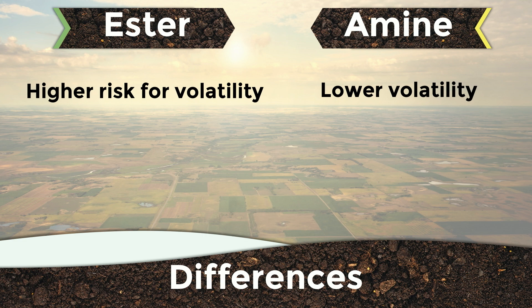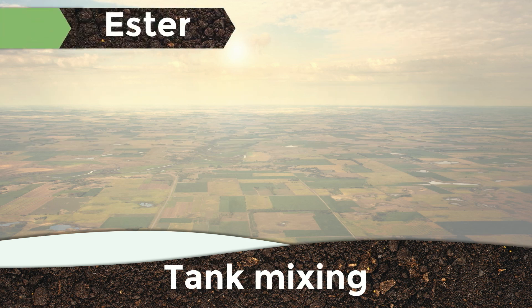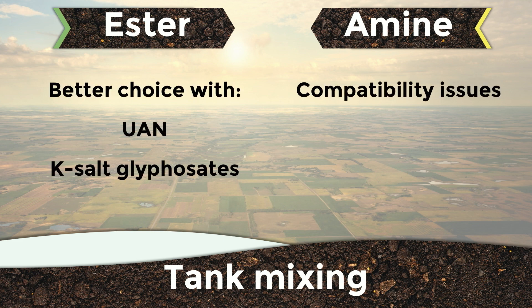Another key difference to consider is that esters provide slightly quicker weed control over amines. Esters are more active on weeds because they are easily absorbed by the plant's leaf. This increased activity makes esters the better choice when more aggressive weed control is needed. Tank mix partners are also a factor when choosing between an ester or amine. If UAN fertilizer is being used as the carrier, then a 2,4-D ester is the best choice for the application, as they generally mix easier with UAN.